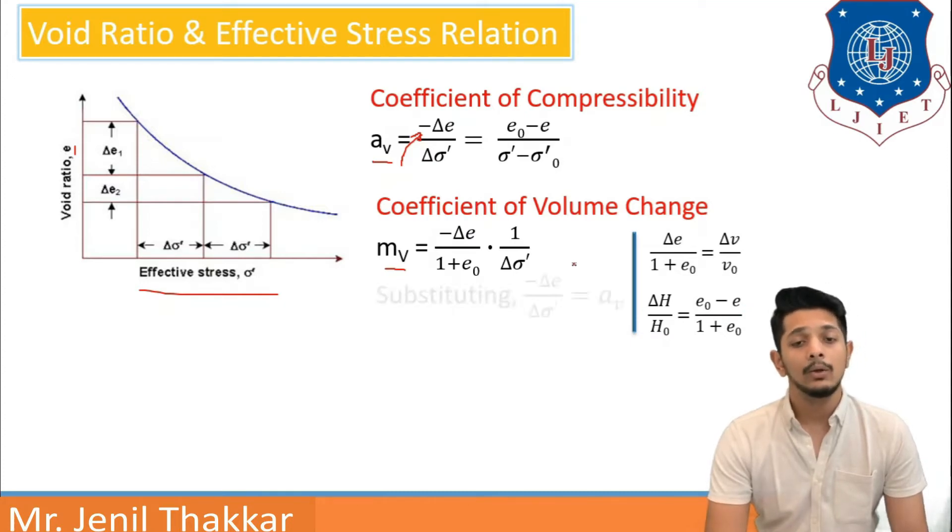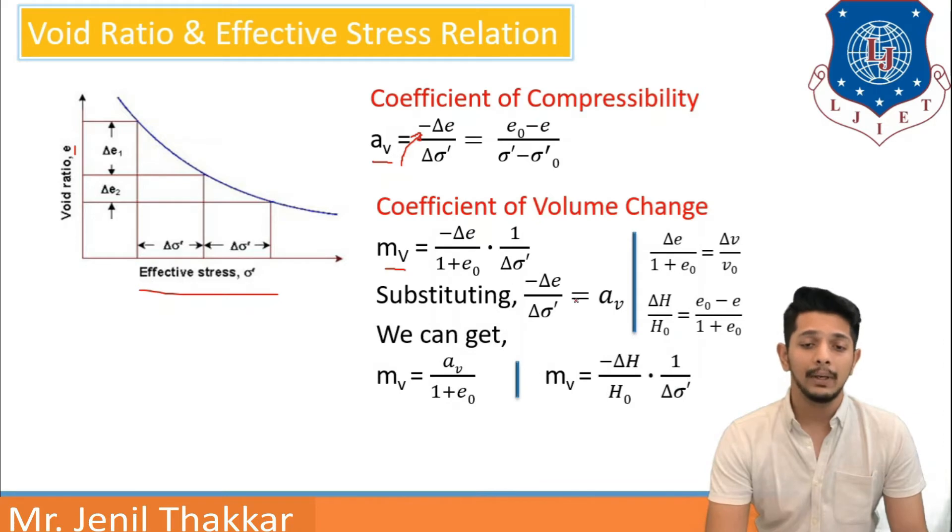We already know coefficient of compressibility Av equals minus delta E upon delta sigma dash. Substituting this as Av here, Mv can be Av upon 1 plus E0. Also, Mv can be written as minus delta H upon H0 into 1 upon delta sigma dash. It is nothing but in place of minus delta E upon 1 plus E0, we have put minus delta H upon H0.